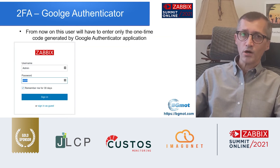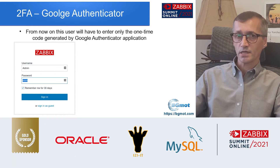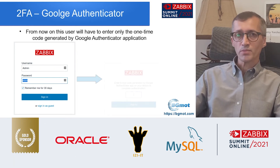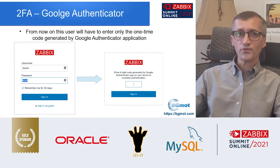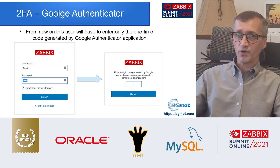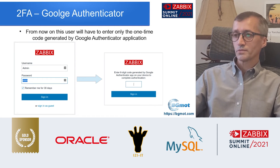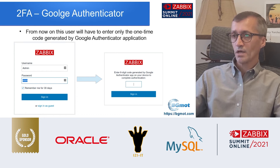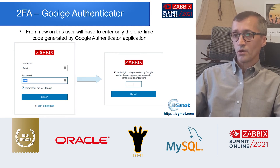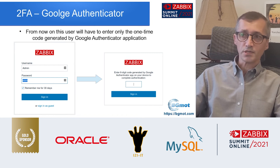Now you work, you log out, you log in again. You don't have to enroll your device again because Zabbix remembers you are already enrolled — the admin user is already enrolled in 2FA. It will accept the 2FA code only from the device that was previously enrolled for this account. So you don't see any QR codes anymore. You just enter the six digits from your Google Authenticator app, and if you enter them correctly, you are logged in. Very simple, as I said, for Google Authenticator.